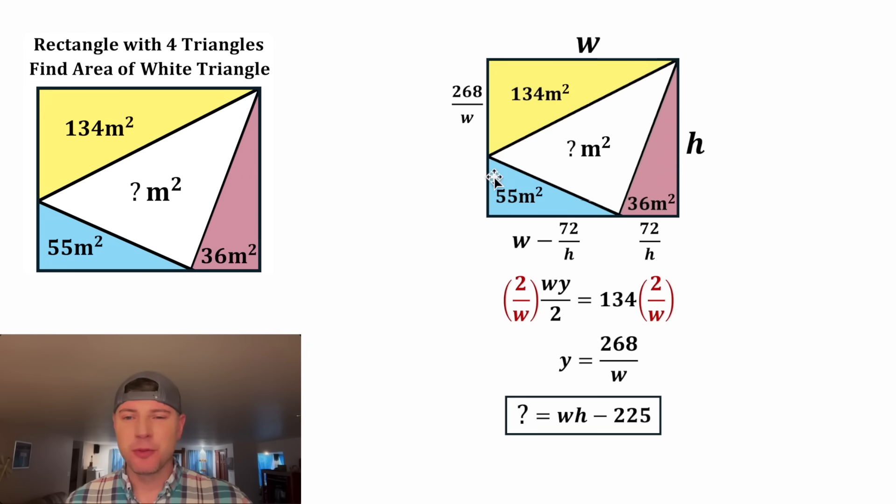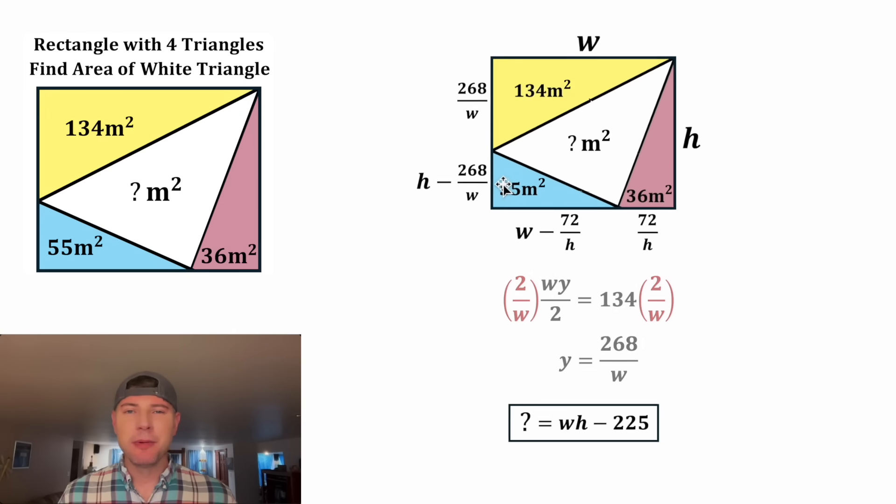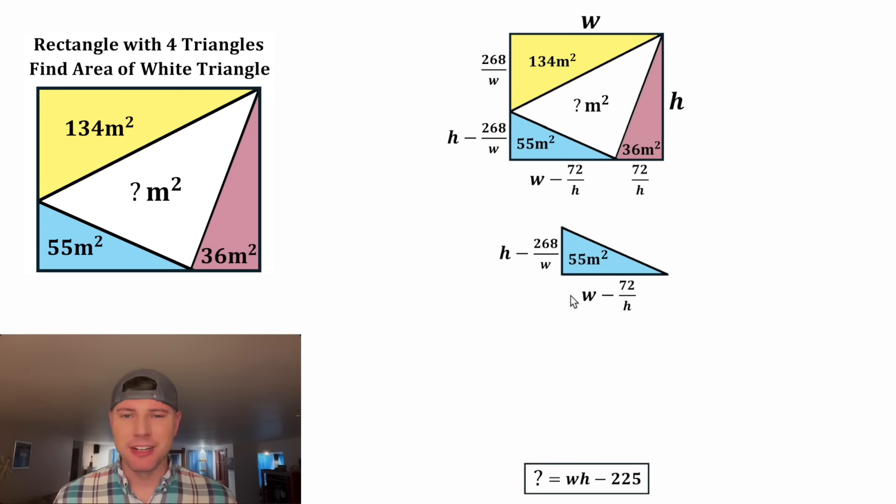And then since we have this distance, we also have this distance. It'll be the entire height of the rectangle H minus the 268 over W. That's this right here. And then we can focus on the area of the blue triangle. It'll be this times this divided by two equals 55.